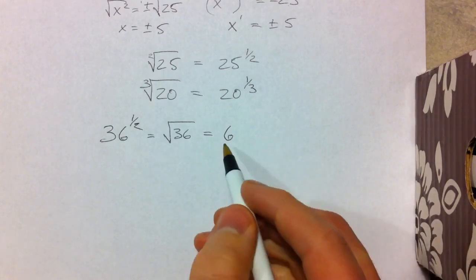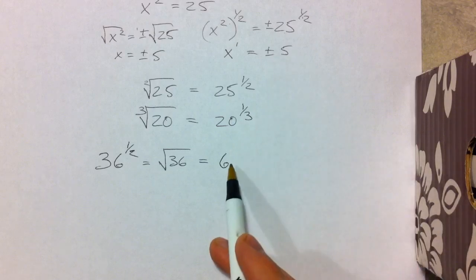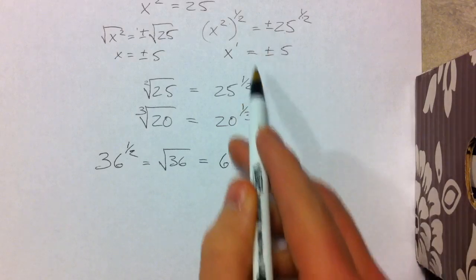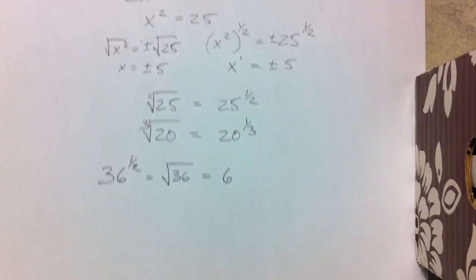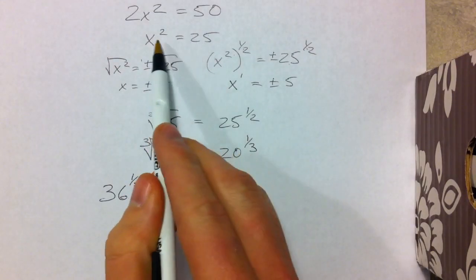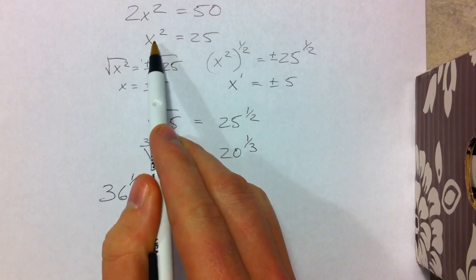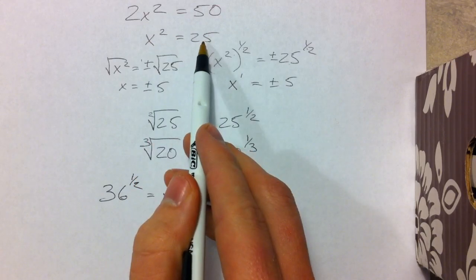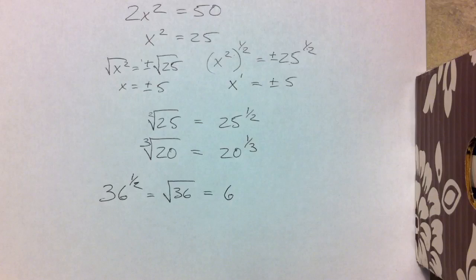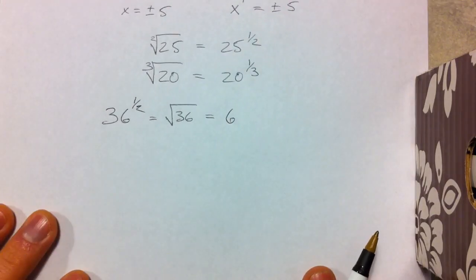Sometimes we get confused about why we included plus or minus up in the equation but not down here. The difference is in solving the equation — x squared equals 25 has two answers because both 5 squared and negative 5 squared equal 25. But here we're just taking the principal square root, so we take only the positive.